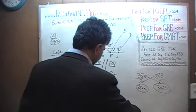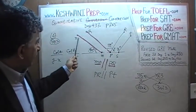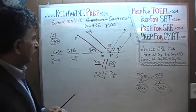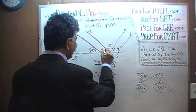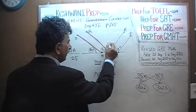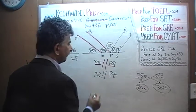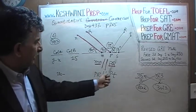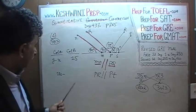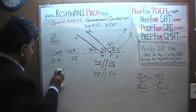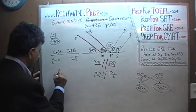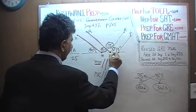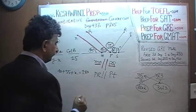Since line MN is parallel to PQ, and this angle is 40 degrees, this inside angle will also have to be 40 — alternate interior angles. Now we know this angle is 40 and we are told this angle is 55. Because this is a straight line, 40 plus 55 plus X has to equal 180.